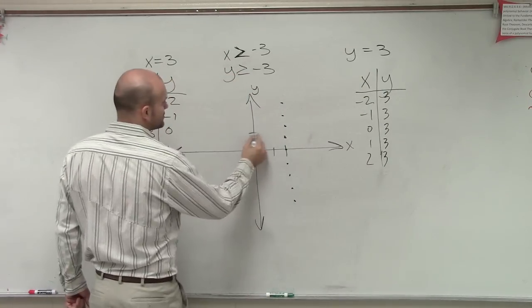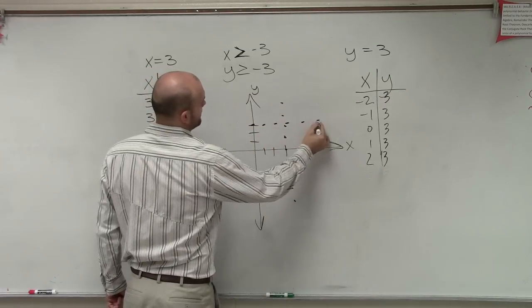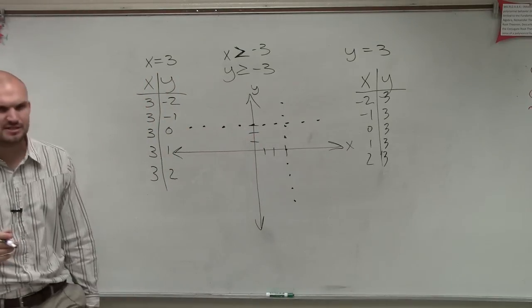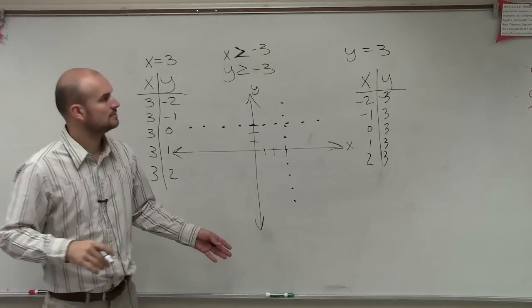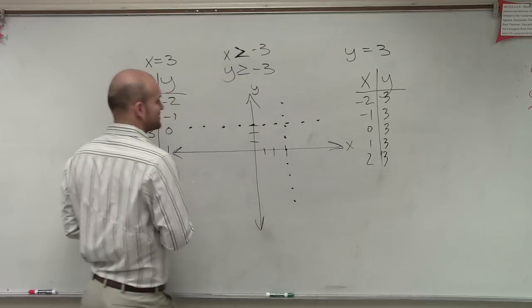So to do that, 1, 2, 3. So it always equals 3. Now, ladies and gentlemen, these are just, I'm just plotting points. Negative 3. Oh, it was negative 3. I wrote it wrong. These are both negative 3s. Mm-hmm.